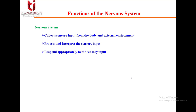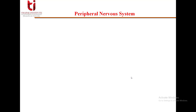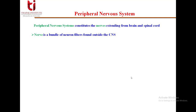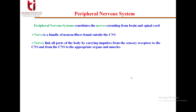Moving over to the next part — the peripheral nervous system. The peripheral nervous system constitutes different nerves that extend from the brain and the spinal cord. A nerve is a bundle of neuron fibers found outside the central nervous system. They link all parts of the body by carrying impulses from the sensory receptors to the central nervous system.